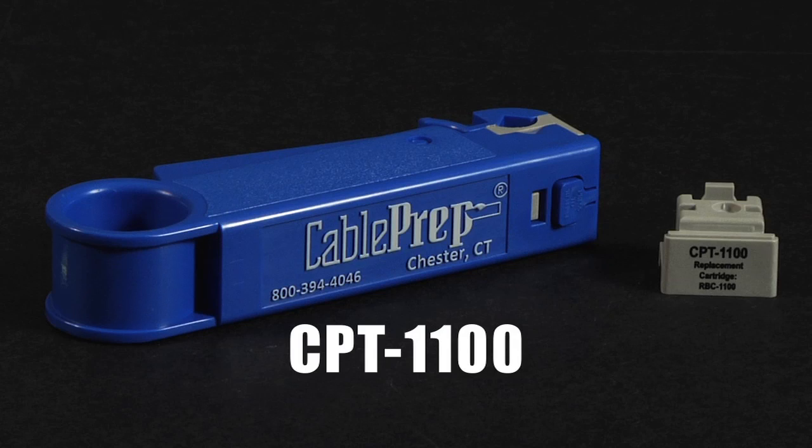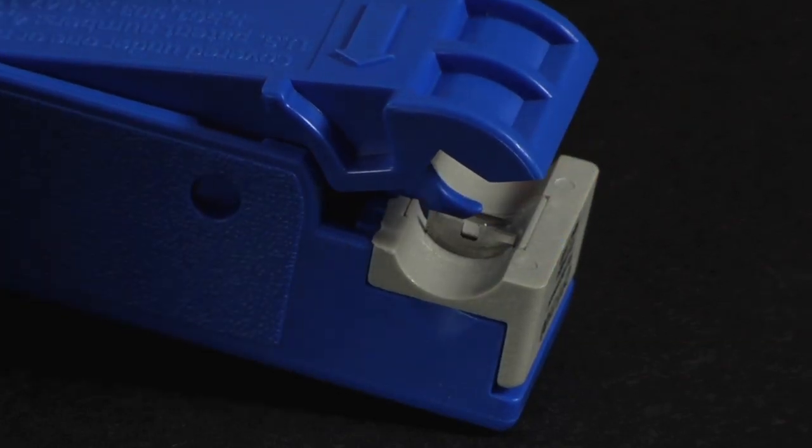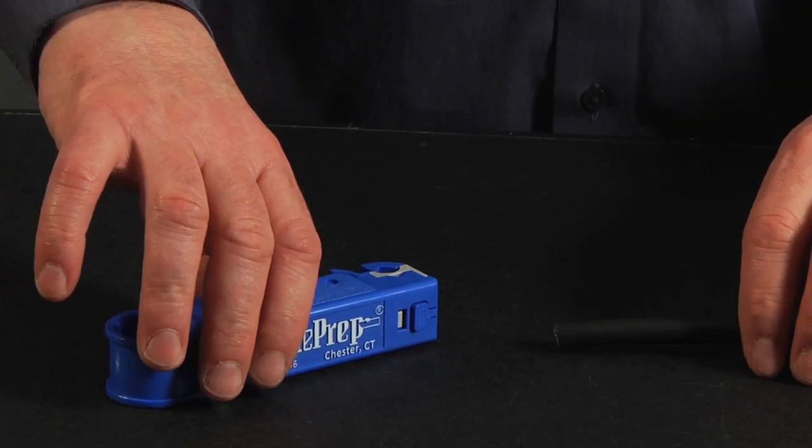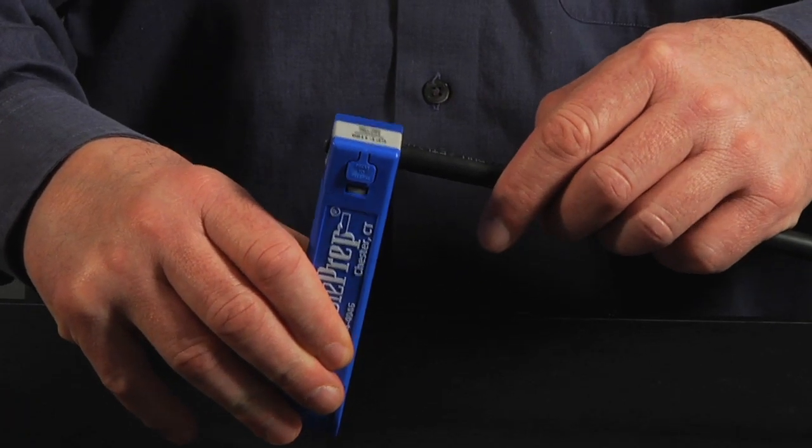The CPT 1100 is used for 7 and 11 type cables. Spin the tool only in the forward direction when stripping these cables due to their low blade coverage.